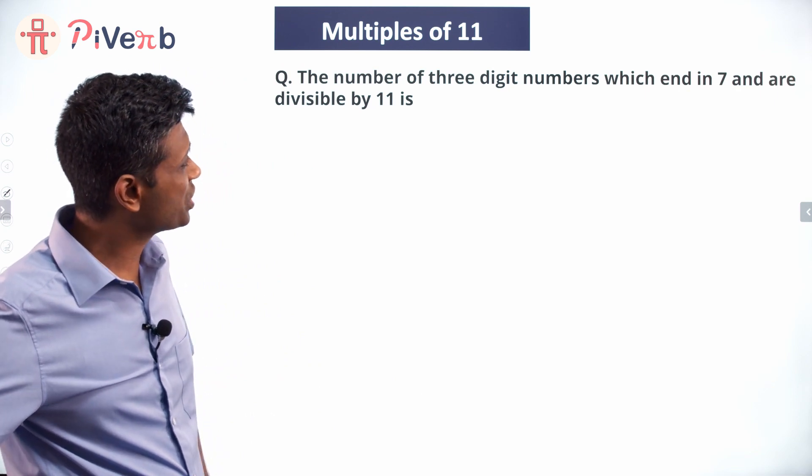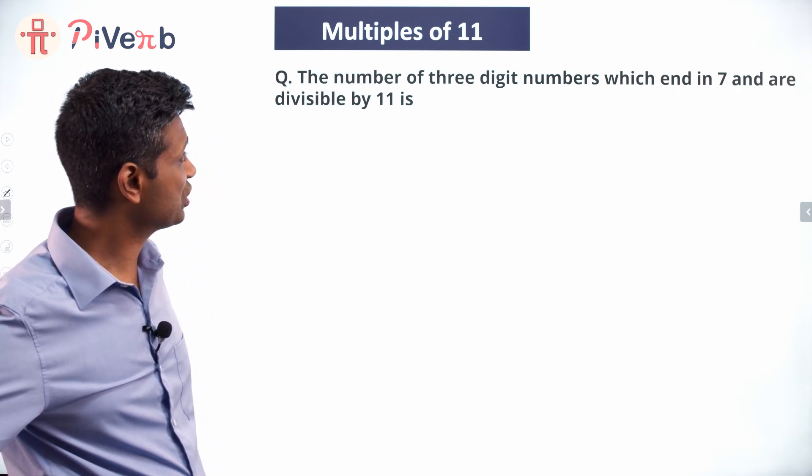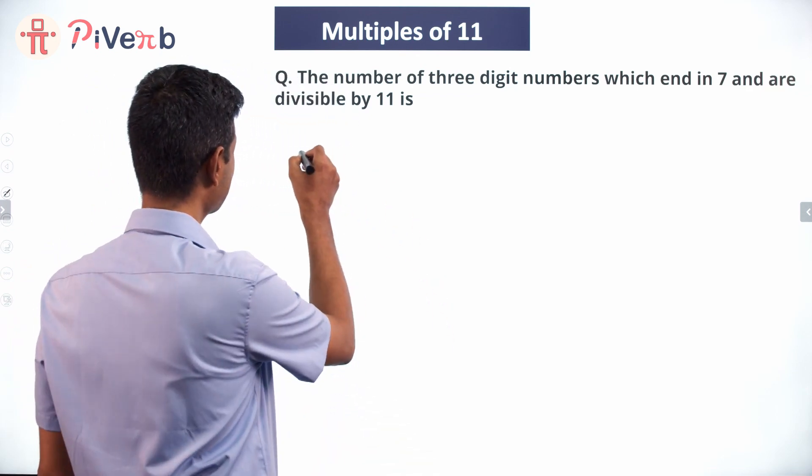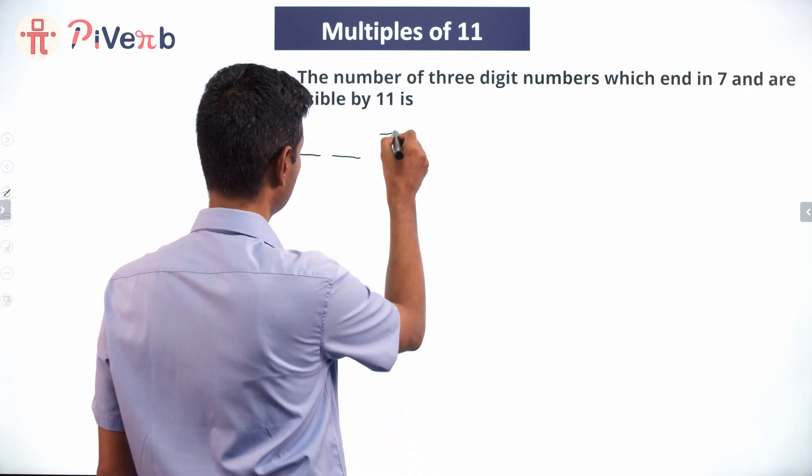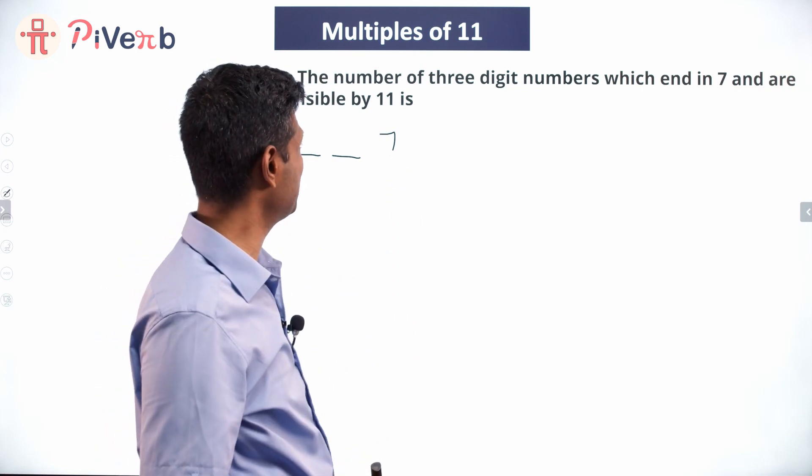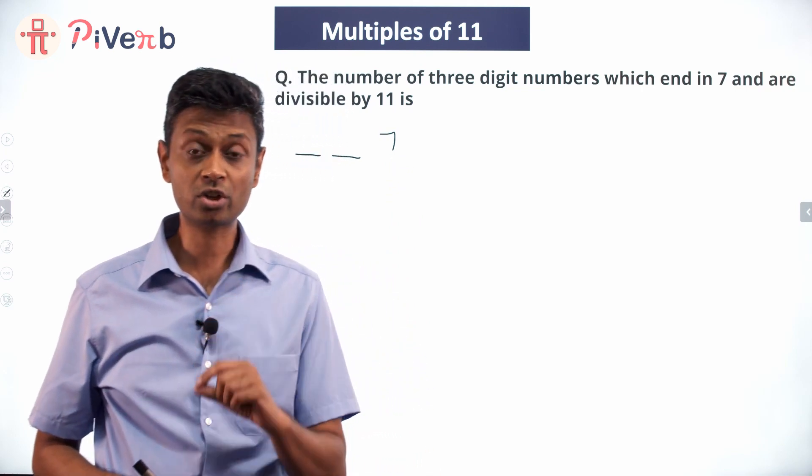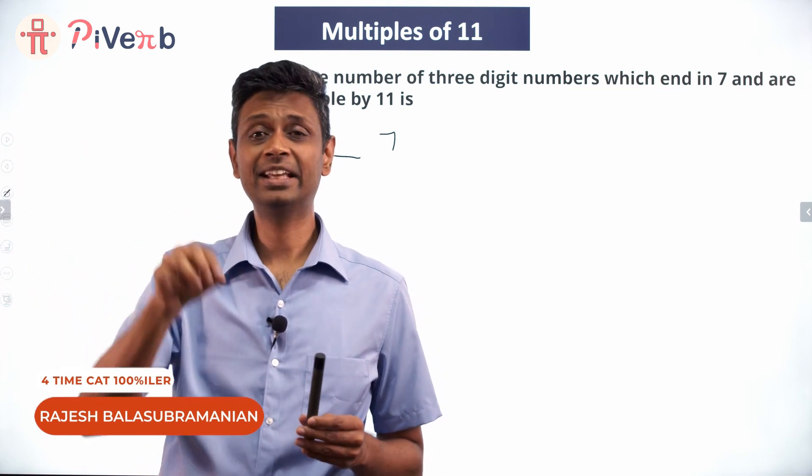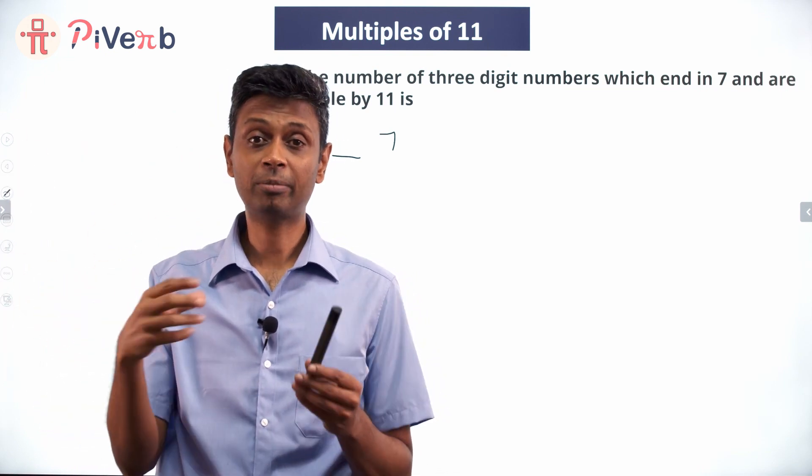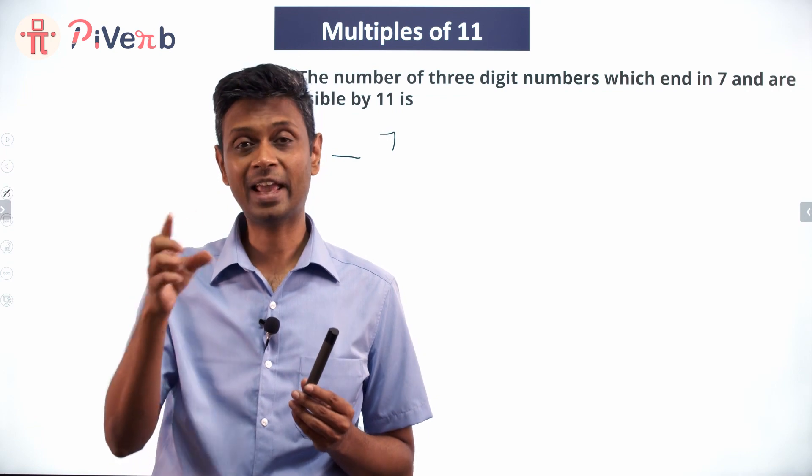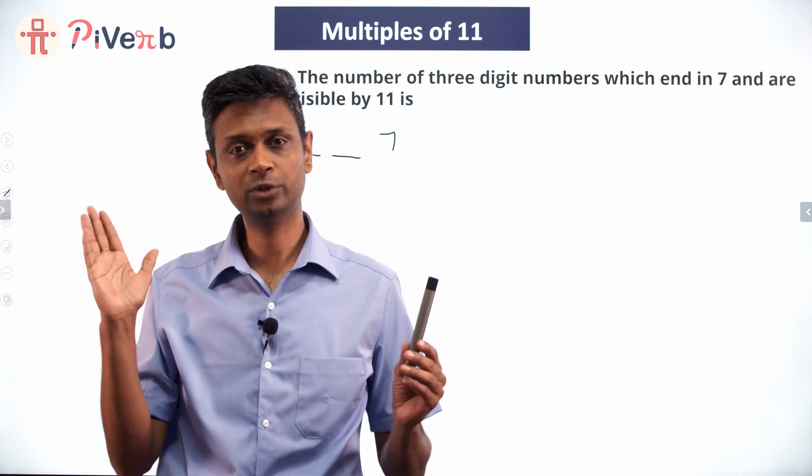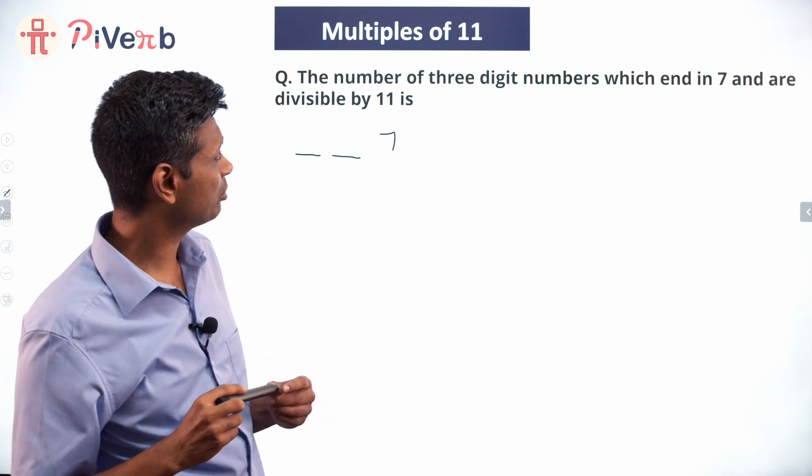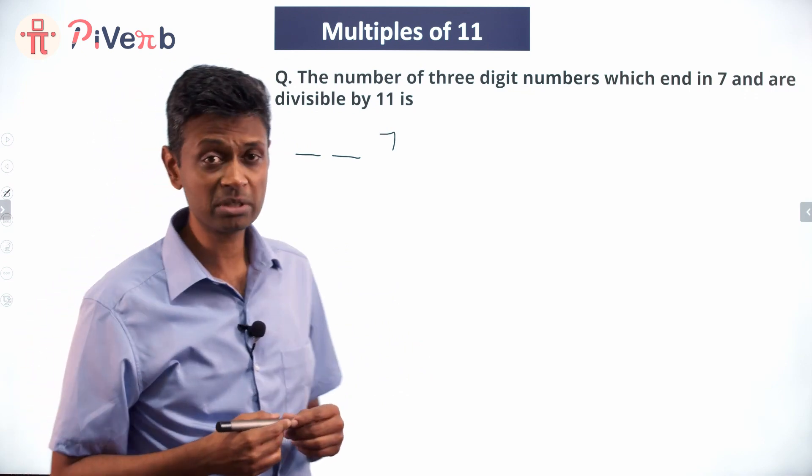The number of three-digit numbers which end in 7 and are divisible by 11. So three-digit numbers that end in 7: dash dash 7. What do we know about divisibility by 11? It's a beautiful test of divisibility. Add odd position digits, add even position digits, subtract one from the other. The difference is either 0 or a multiple of 11.